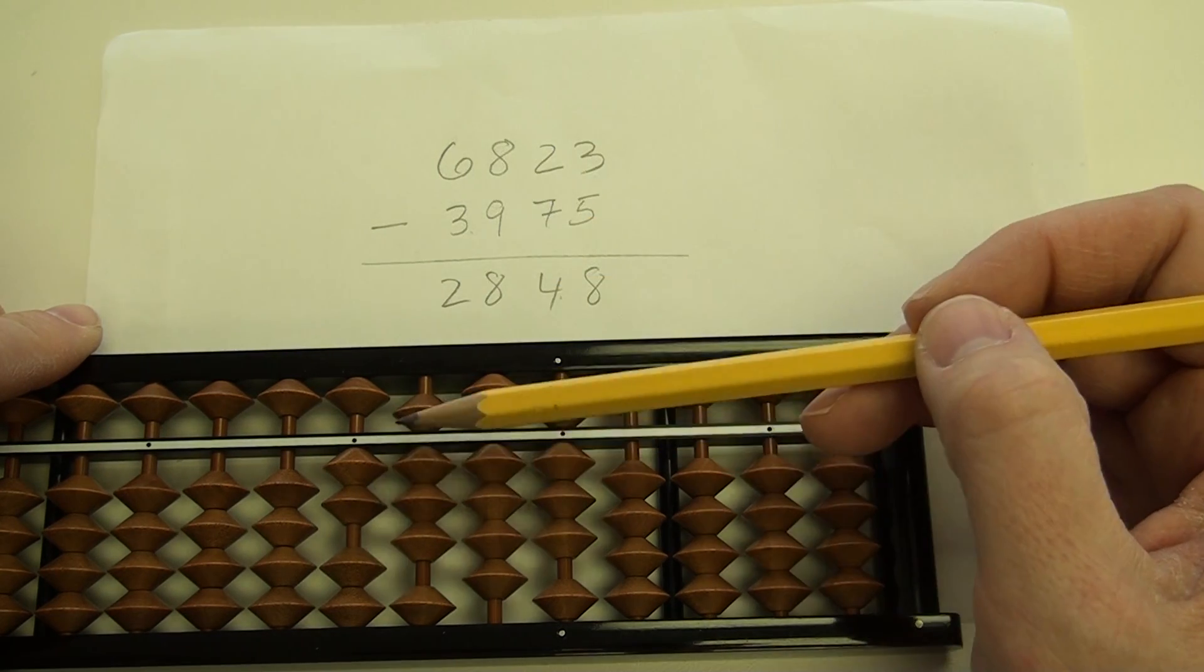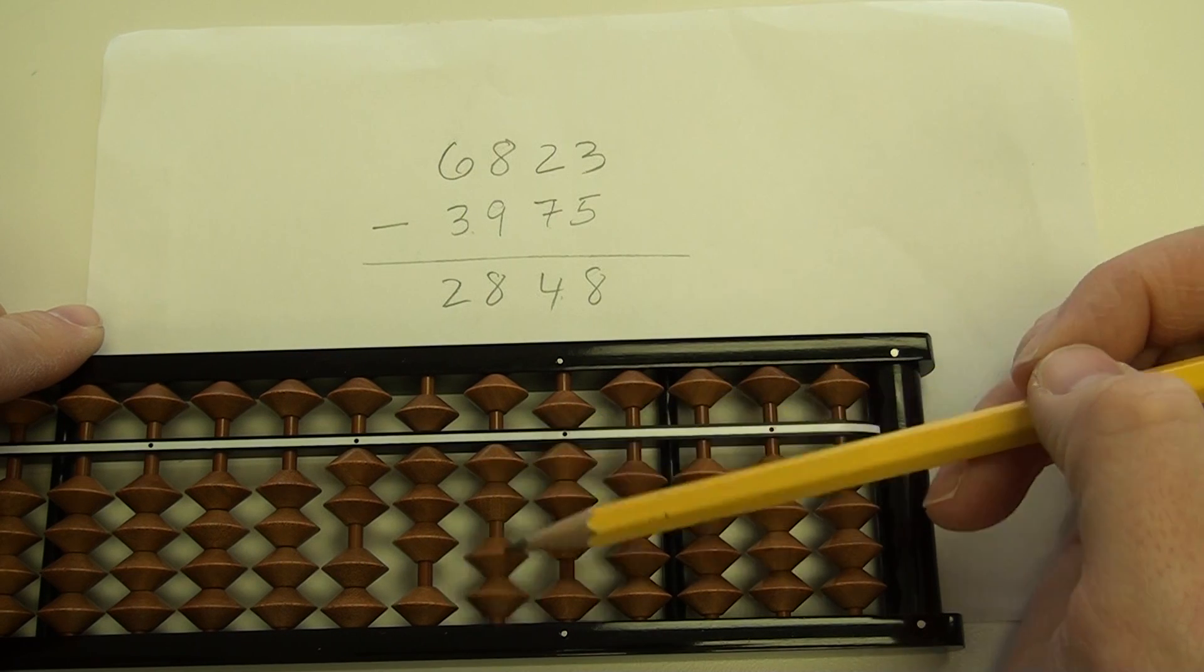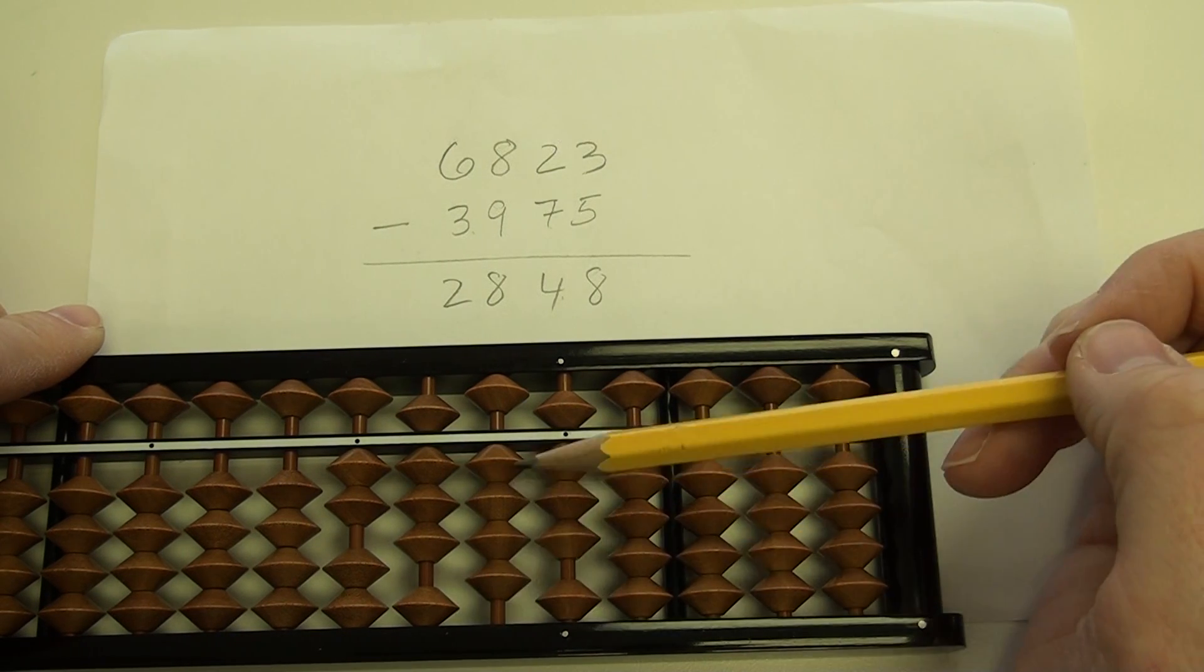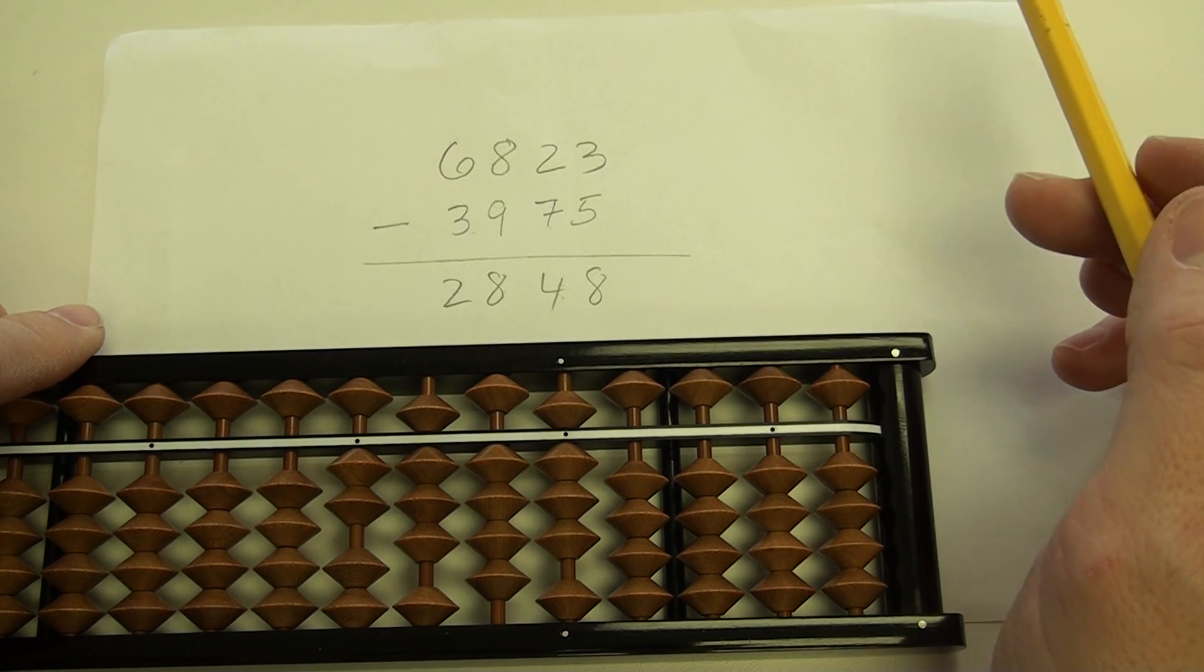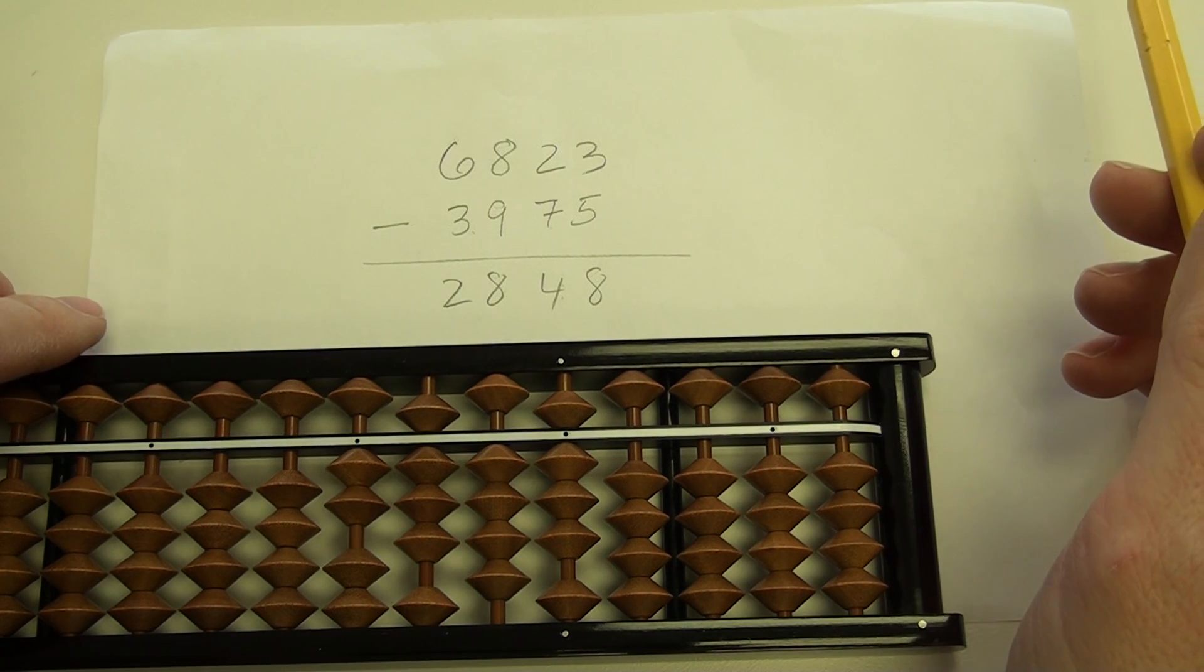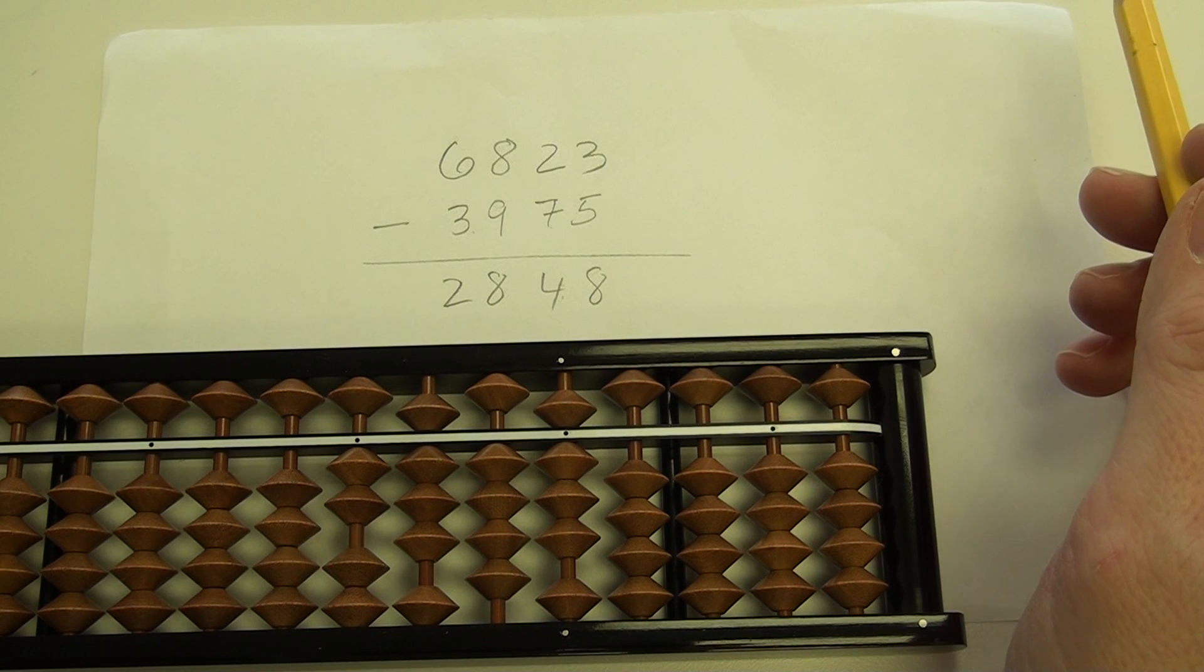So now I've done my subtraction: 2,840, whoops, should be up there, 48, 2,848. And that is how you perform subtraction with the Japanese soroban.